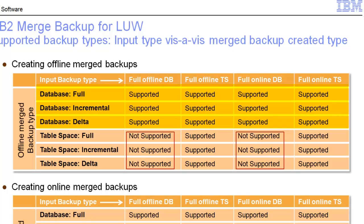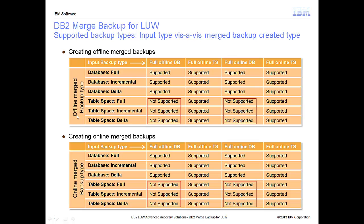So you can have a database full backup, use a database incremental or delta, and produce a database merge. Or you can have a database full backup, take tablespace incremental or delta, and end up with a tablespace merge. But what you can't do is start off with a tablespace full backup and then try to add a database incremental or delta. These red boxes are trying to show that one particular combination doesn't work. The same exceptions apply whether you're doing offline or online merge backups.